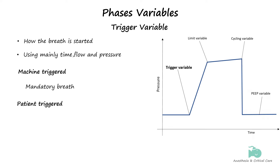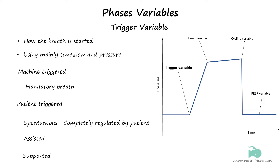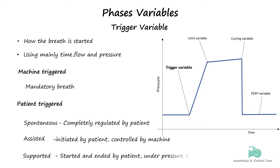Patient-triggered breaths are termed spontaneous, assisted, or supported. A spontaneous breath is completely regulated by the patient with no contribution by the ventilator. An assisted breath is initiated by the patient, but all other aspects of the breath are controlled by the ventilator. A supported breath is initiated and ended by the patient, but the breath is delivered under positive pressure by the ventilator.